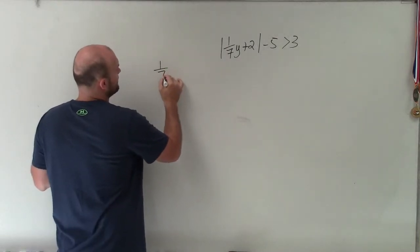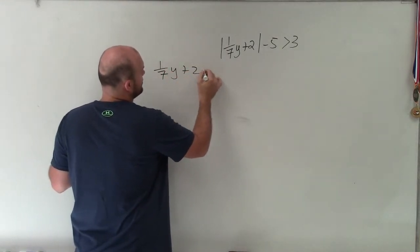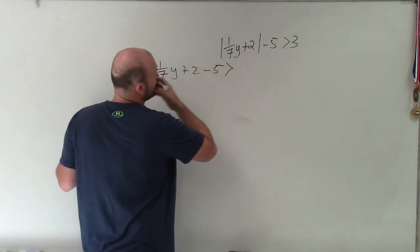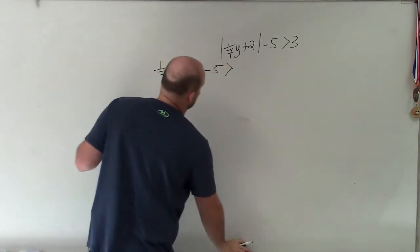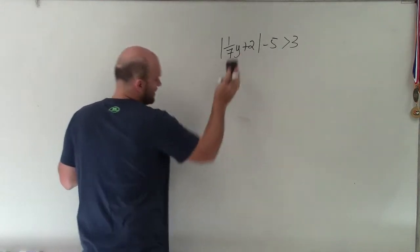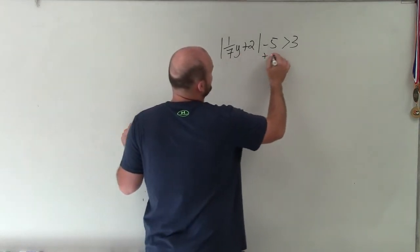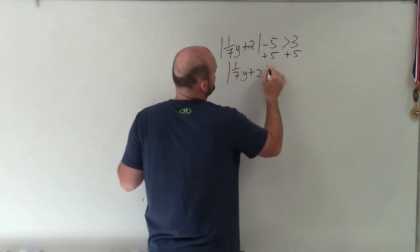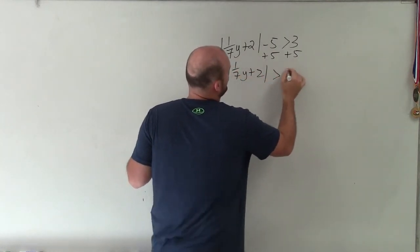So then for my two cases, I'm going to have 1 7th y plus 2. Yeah, minus 5 is actually, you know what, never mind. Before I do that, I want to isolate my variable. So I'm going to add 5 to both sides. So that's absolute value of 1 7th y plus 2 is greater than 8.